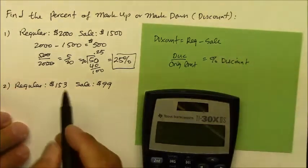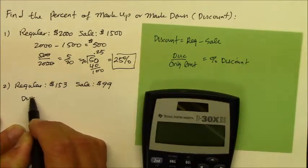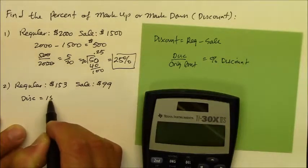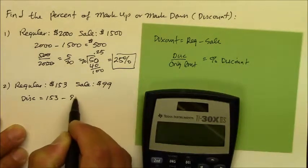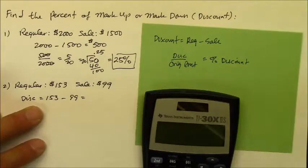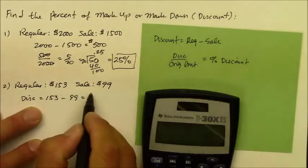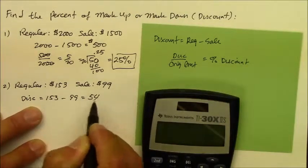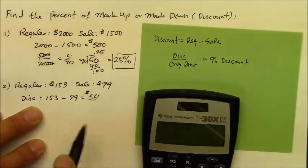Let's show the work. The discount is the regular price minus the sale price. Making sure I don't make a mistake, 153 minus 99 is $54. So I'm getting a discount of $54. That's a good discount.